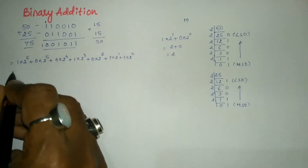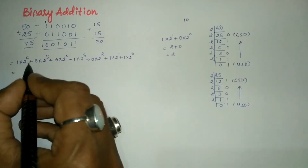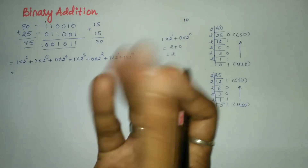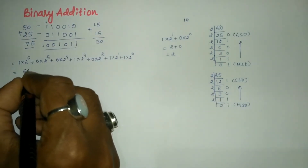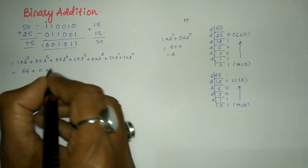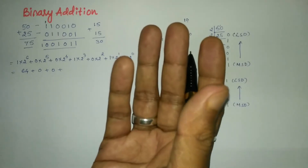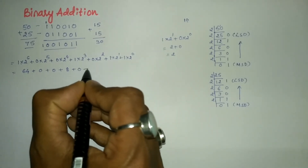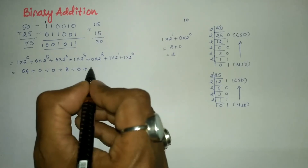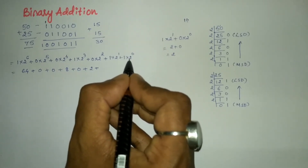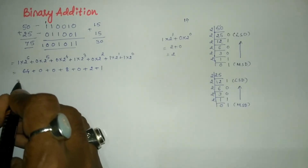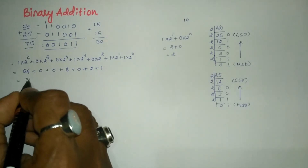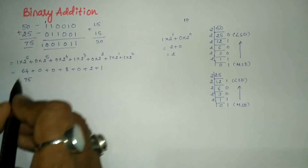Simplifying: 2 to the power 6 is 64, so 1 times 64 is 64; 0 into anything is 0; 0 into anything is 0; 2 to the power 3 is 8, so 1 times 8 is 8; 0 into anything is 0; 2 to the power 1 is 2, so 1 times 2 is 2; 2 to the power 0 is 1, so 1 times 1 is 1. Therefore 64 plus 8 is 72, plus 2 is 74, plus 1 is 75. The binary result equals 75, which is correct.